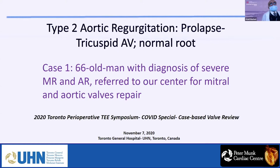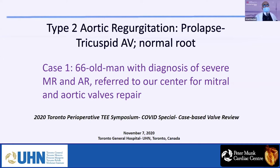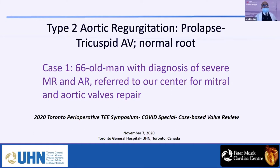My lecture will be about type 2 aortic regurgitation: prolapse of the tricuspid aortic valve in a normal aortic root. Case number one is a 66-year-old man with a diagnosis of severe MR and AR, referred to our Center for Mitral and Aortic Valve Repair.